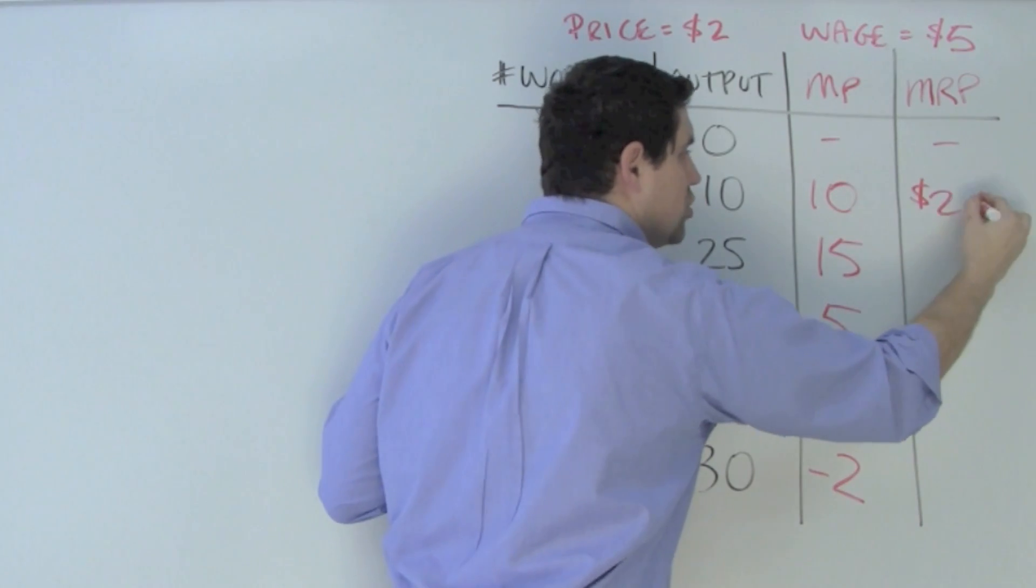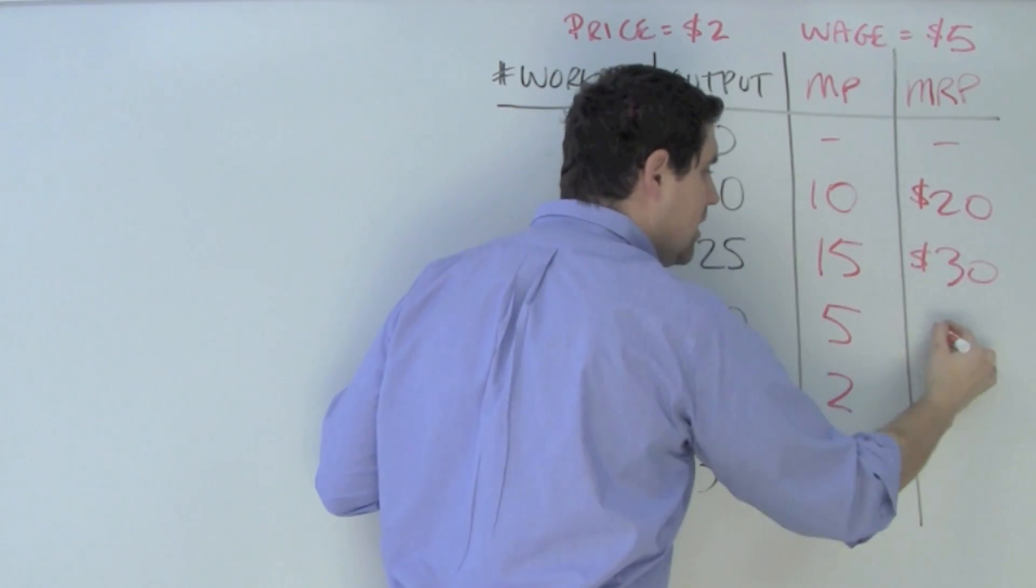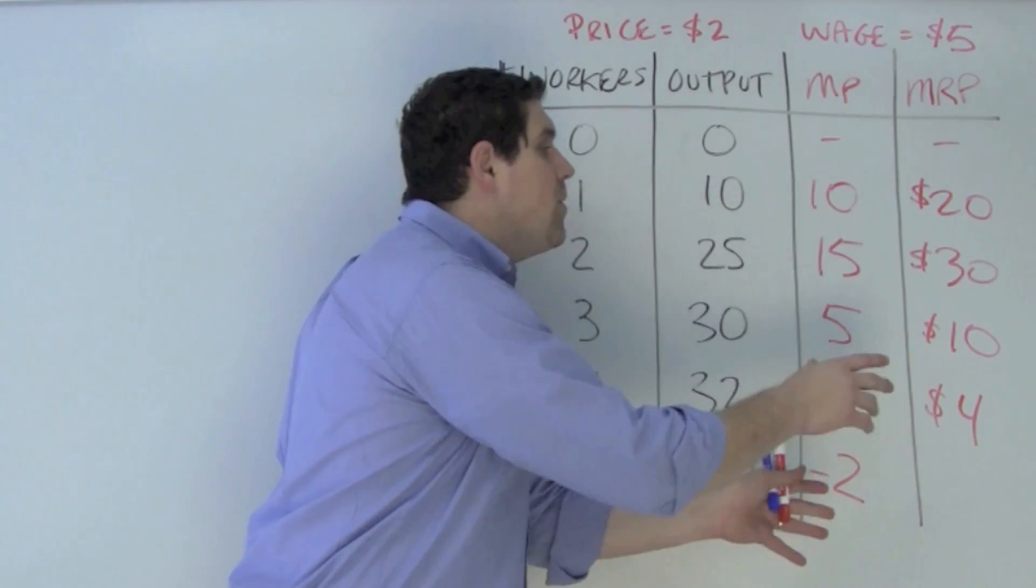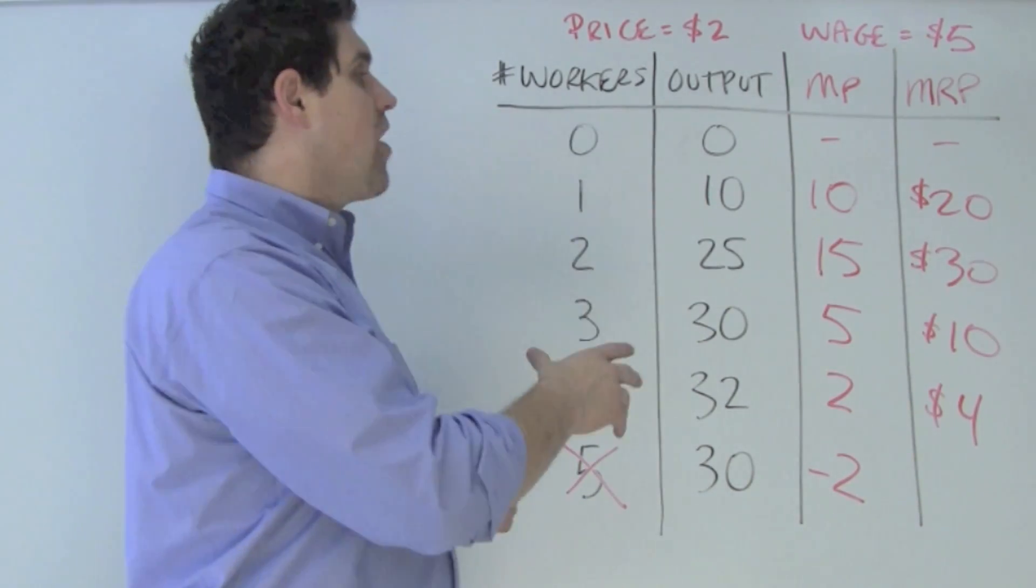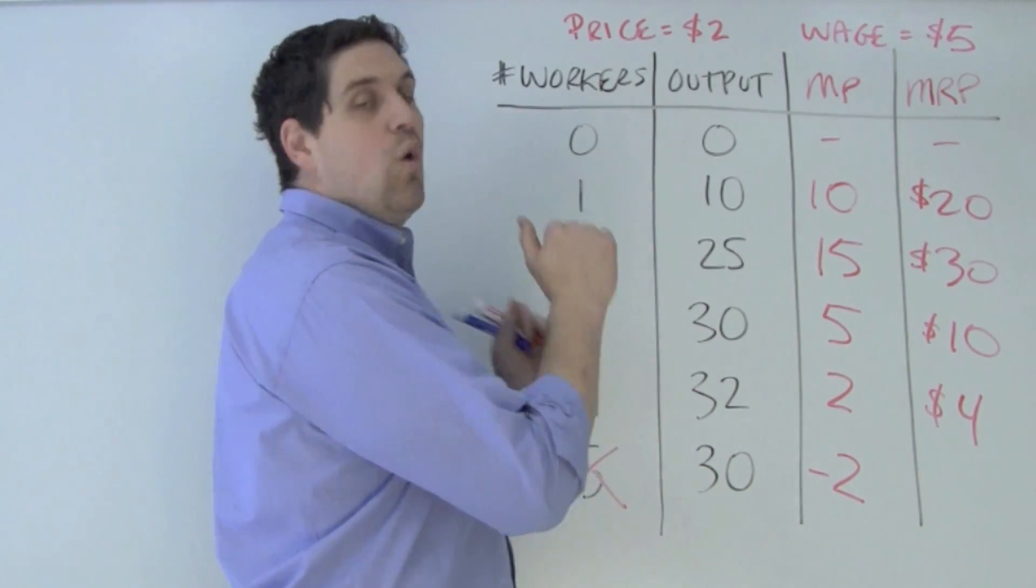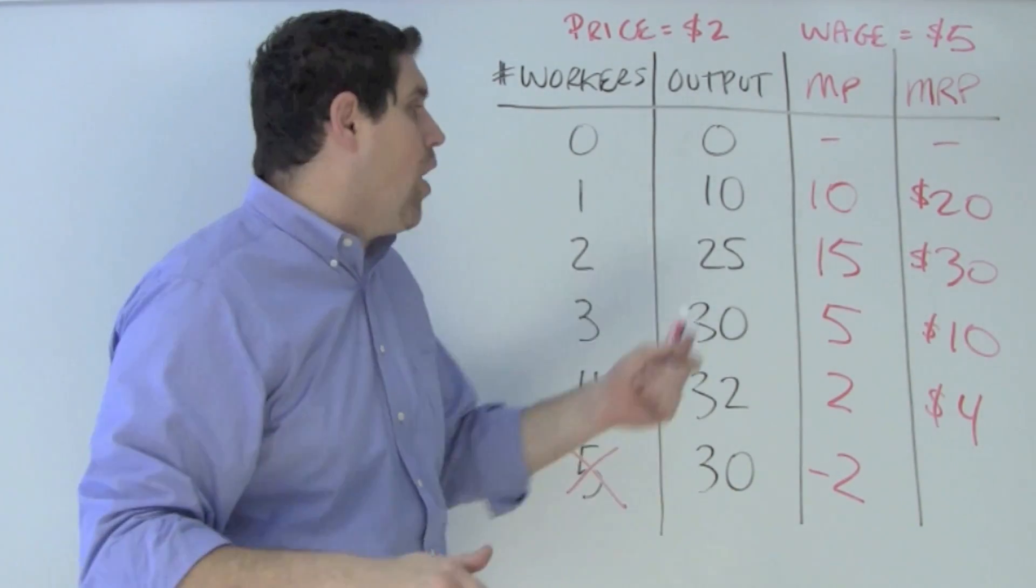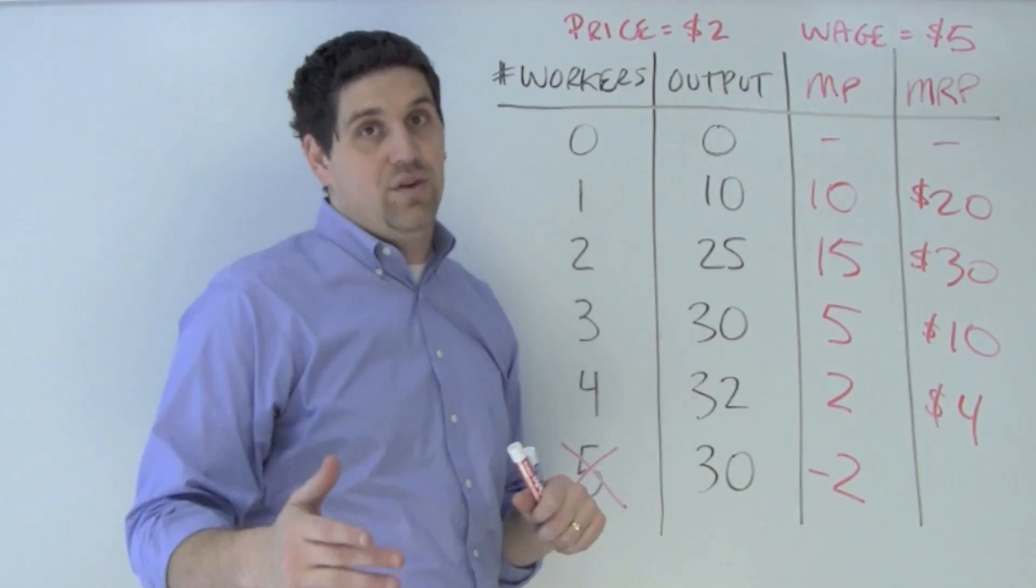So this worker adds an additional 20, next one additional 30, additional 10, additional 4. Now the MRP represents the demand or how much this firm is willing to pay those workers. This firm is willing to pay the second worker up to $30. If the wage is $31, they won't hire them because they only generate an additional $30 of revenue.